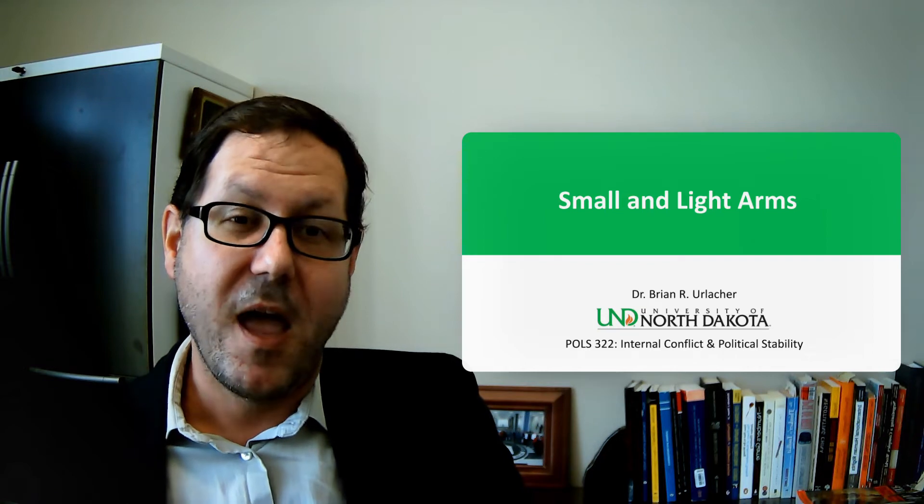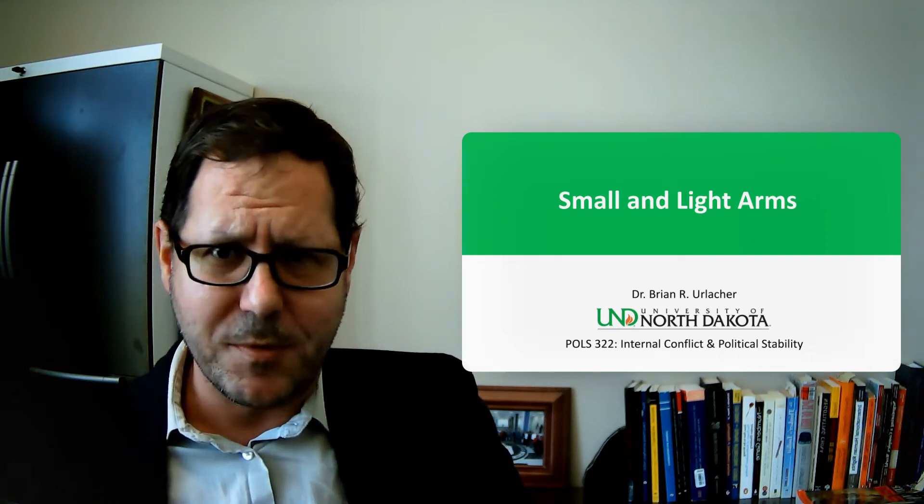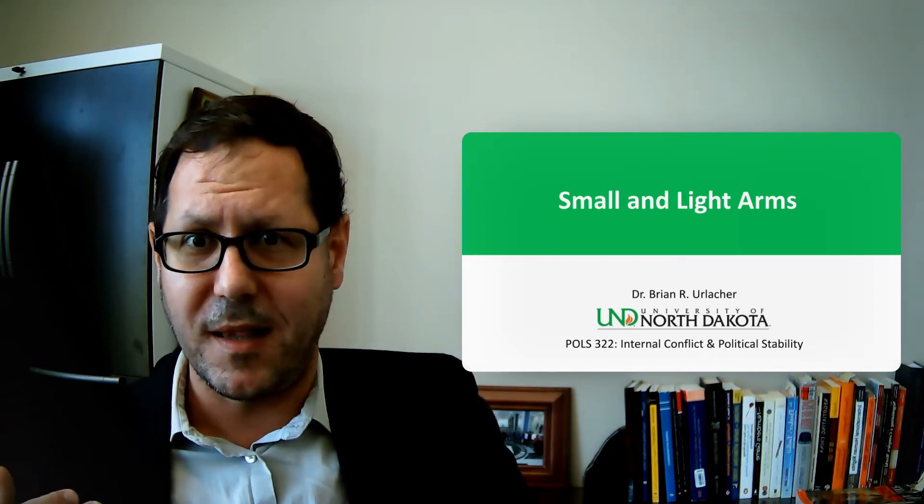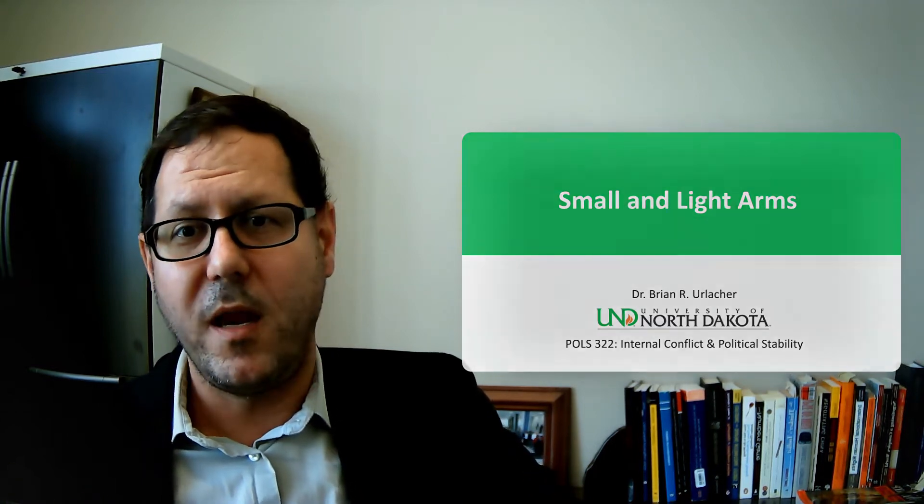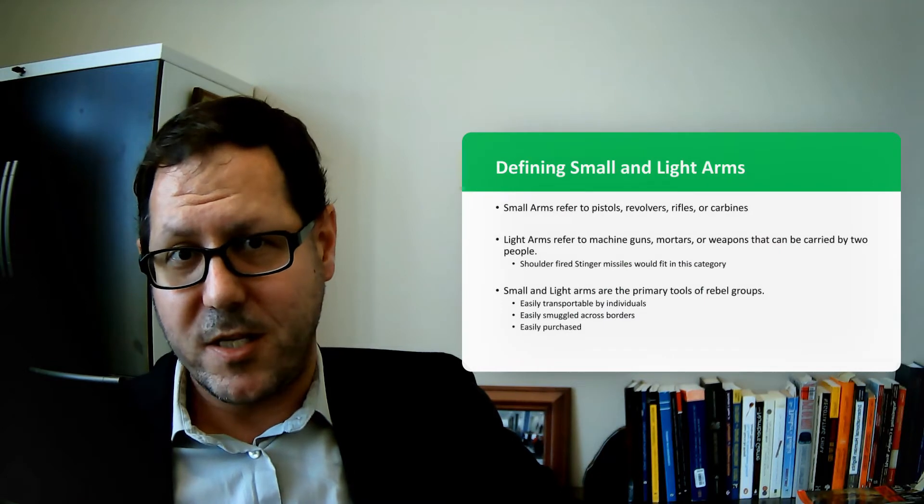We've been talking about resources that are necessary or critical for rebellion to be able to take off and help explain how rebel groups operate and behave. We talked about things like drugs, gemstones, and social endowments, but I'd like to talk today about small and light arms, which end up being an important, maybe even necessary component of a rebel group being able to challenge the state.